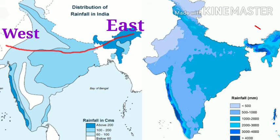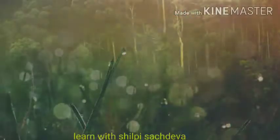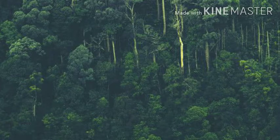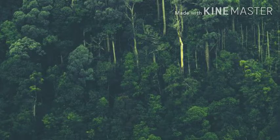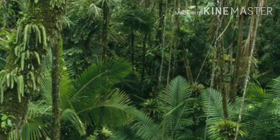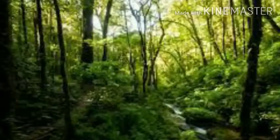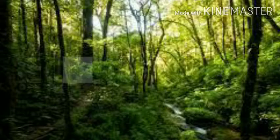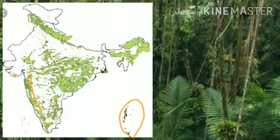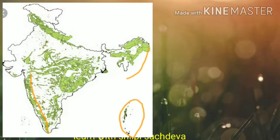Thus, the north-eastern state of Meghalaya is one of the wettest areas in the world, whereas the north-western side of India is the Thar Desert. Tropical rainforests are very dense, such that sunlight does not reach the ground surface. They have different types of trees which shed their leaves at different times of the year. Therefore, these forests always appear green and are known as evergreen forests. These forests are found in Andaman and Nicobar Islands, along the slopes of the Western Ghats and parts of the north-eastern states of Assam, West Bengal and Odisha.